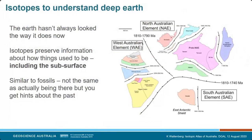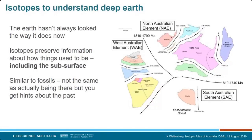The image on the right is an interpretation of how all the pieces of the continent might have been configured about 1800 million years ago — recognisable, but very different to now. We can use isotopes because they preserve information about how things used to be, including subsurface information. Similar to fossils, you don't get the entire picture, just a tantalising snapshot, but it's enough to give hints about the past and start building that understanding.